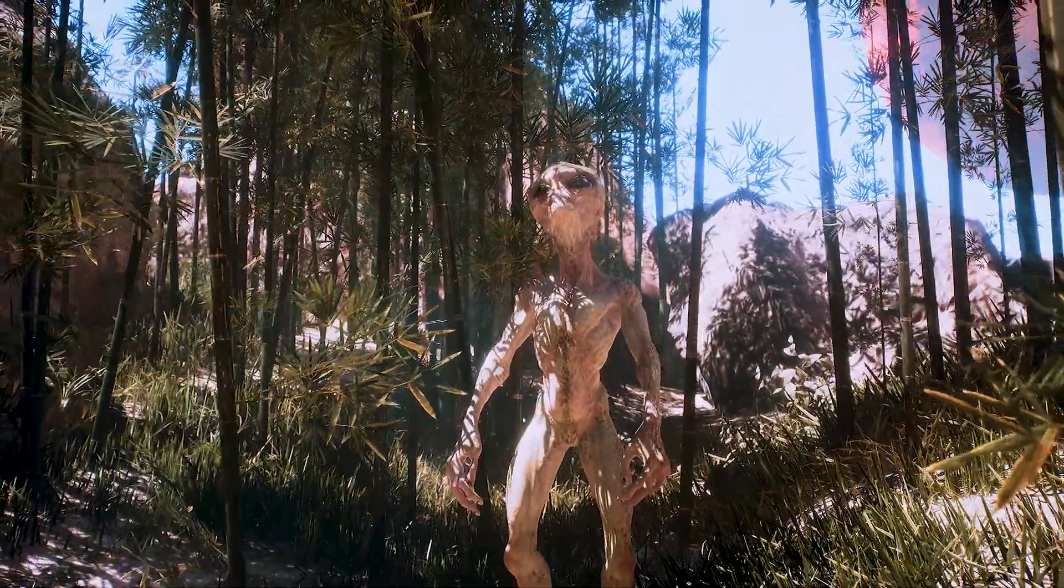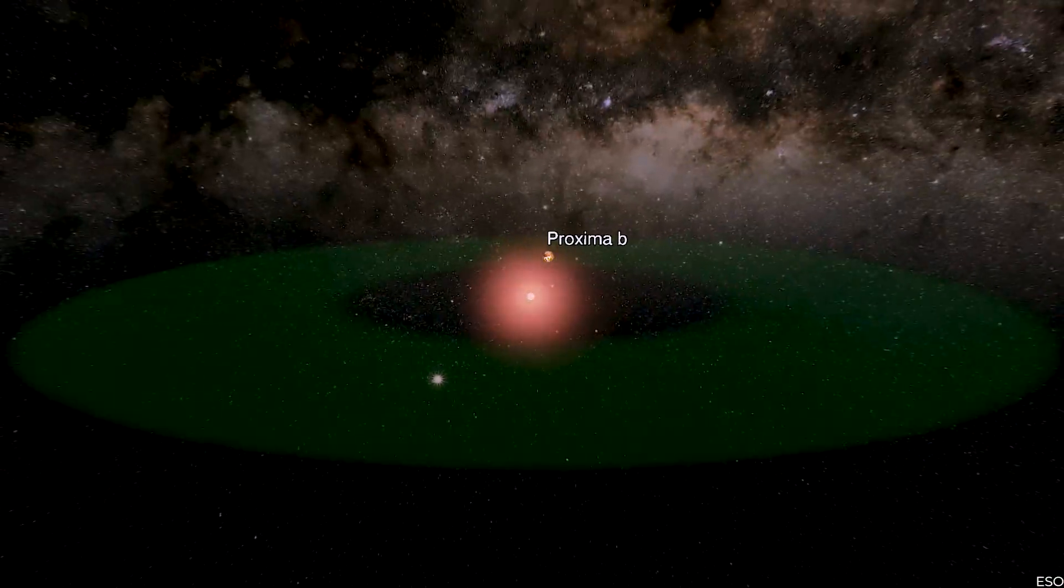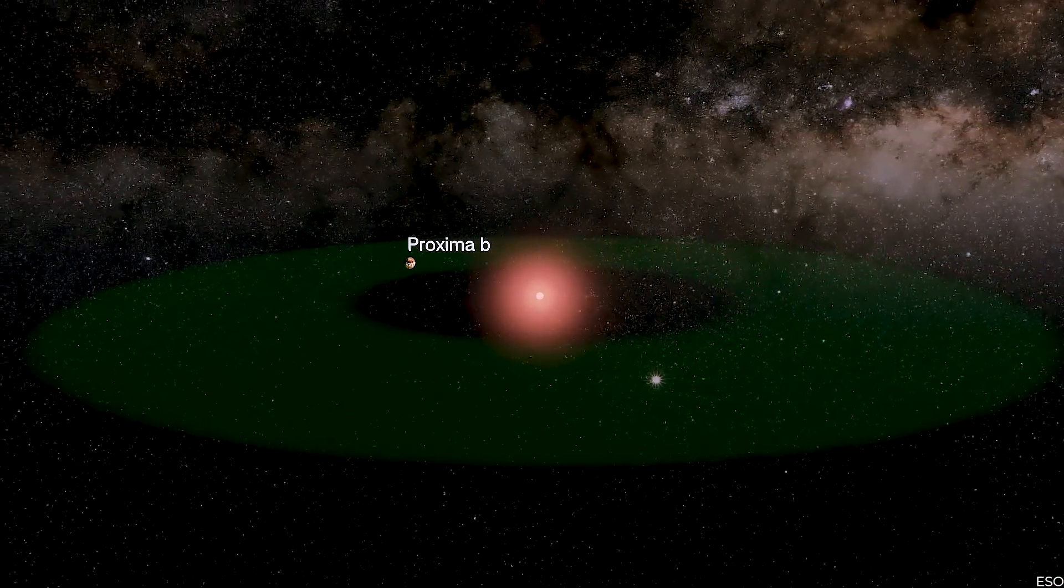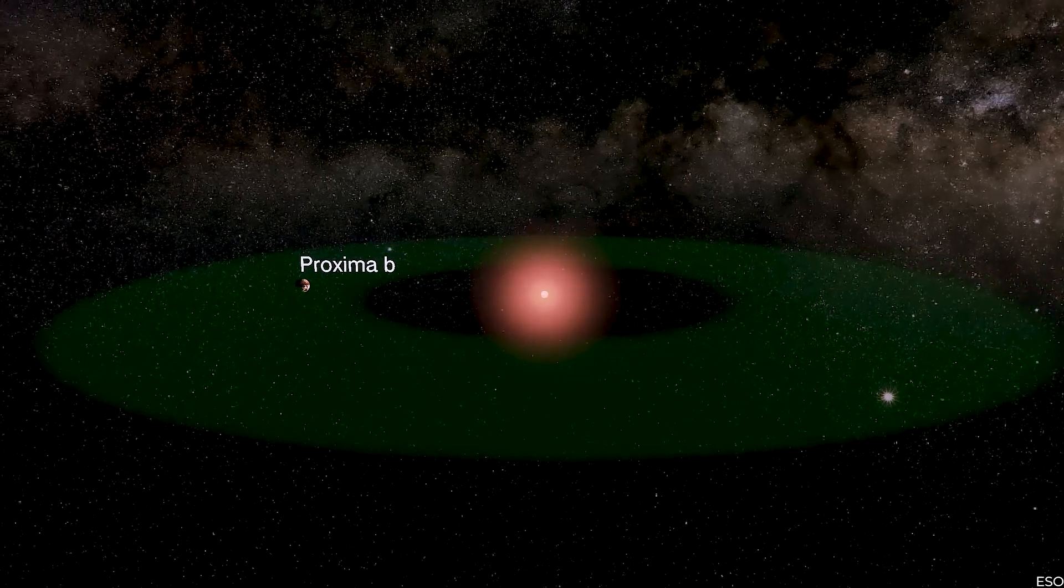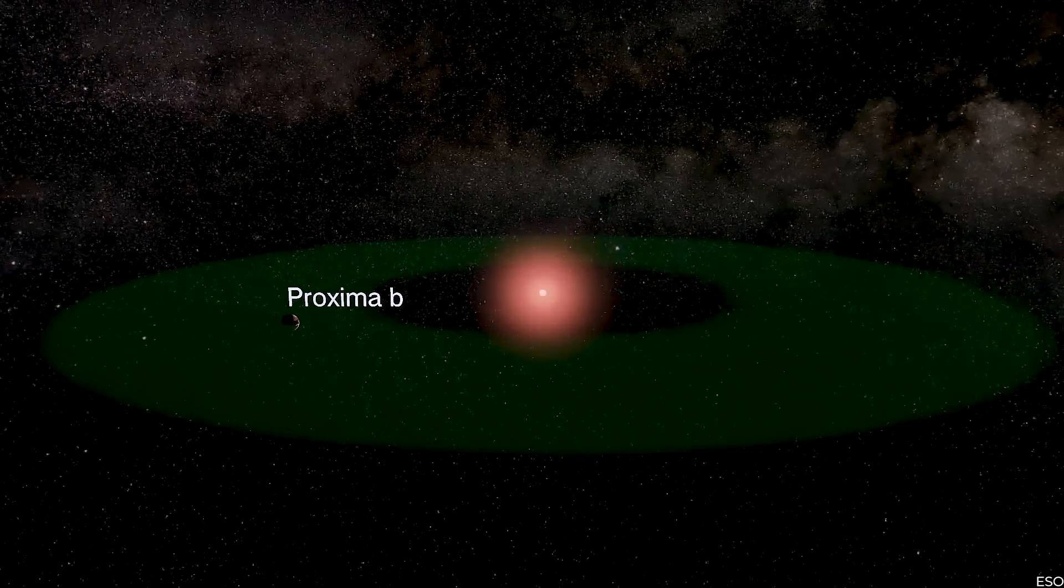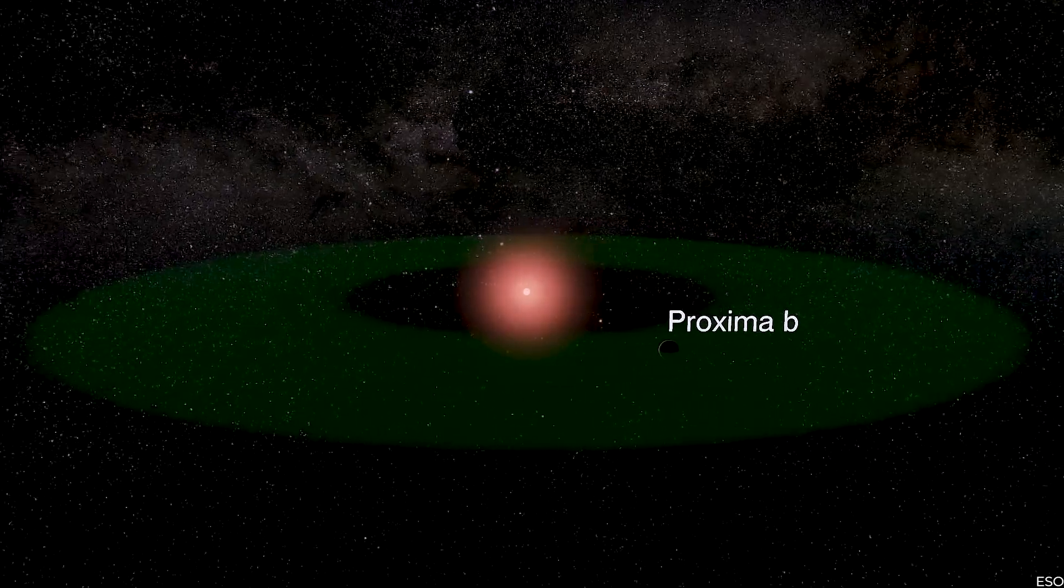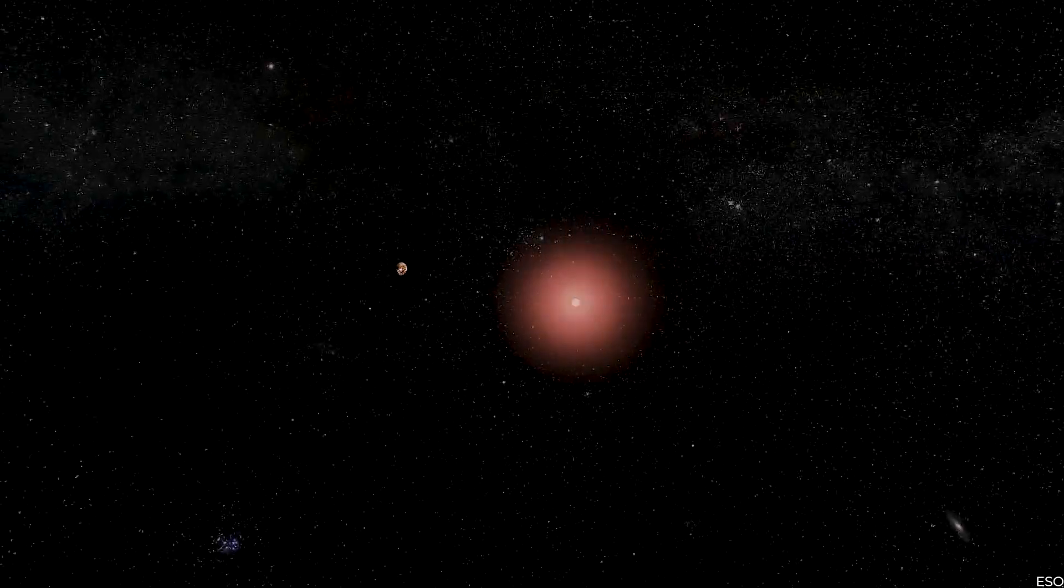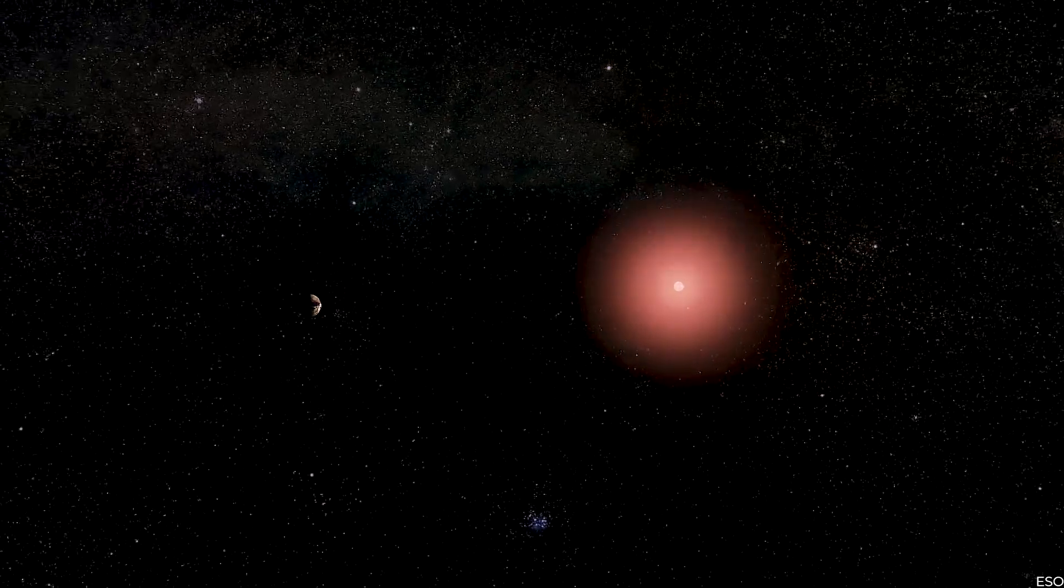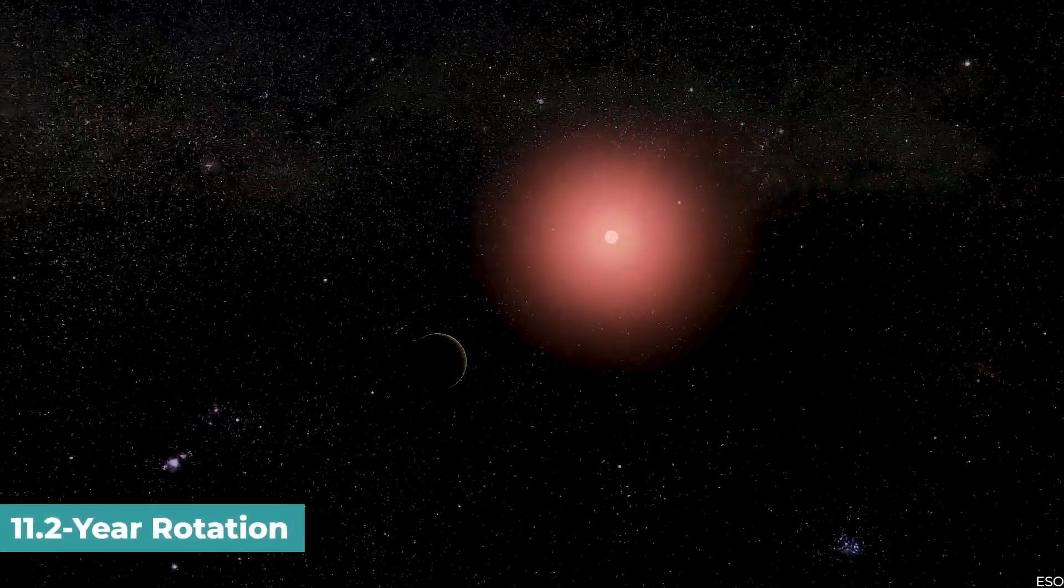Since the discovery, Proxima b is tidally locked to its star, which means that one side is constantly facing Proxima Centauri and the other is permanently dark. It is near its star, with just an 11.2-year rotation.